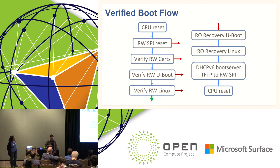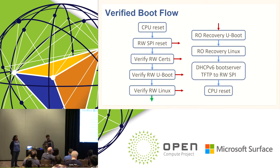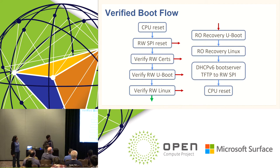This is the verified boot flow. When the system comes back up, it always boots the read-only flash. The read-only flash has the public key burned in; it checks the signing keys, verifies the image signing keys are okay, then checks the U-boot code and jumps into U-boot. U-boot then checks the root file system and the kernel image before giving control to the kernel. In case of failure, it goes to the recovery U-boot, which is part of the read-only memory. From there it can boot the golden image inside, or go to TFTP to get a fresh image, burn it onto the read-write flash, and reboot.